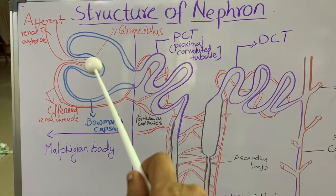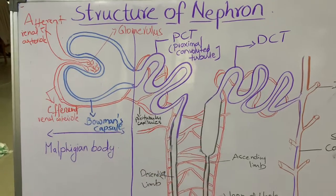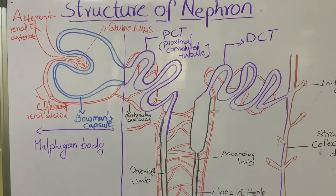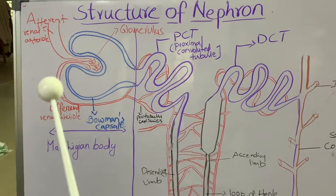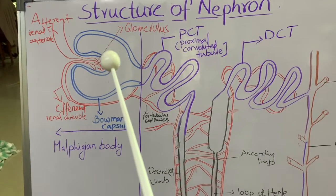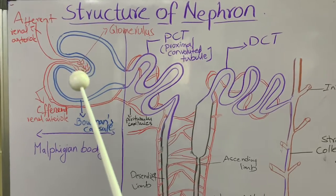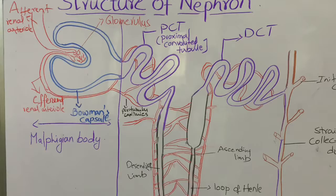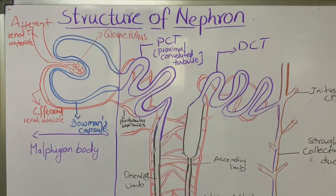The endothelial cells of the capillaries present in the glomerulus contain pores known as fenestration pores. These fenestration pores of the capillaries and the podocyte slit pores are useful for ultrafiltration in the glomerulus. We will discuss this in detail in the formation of urine.